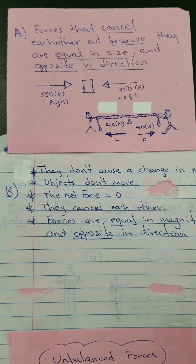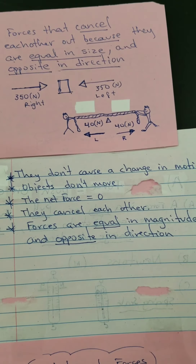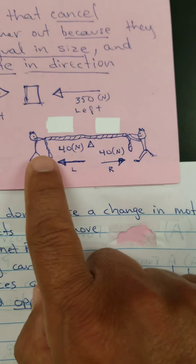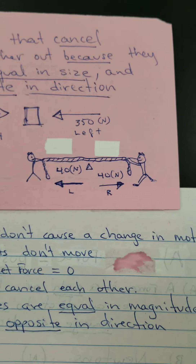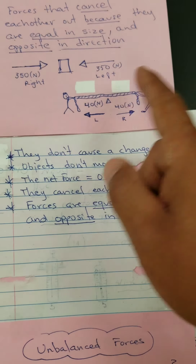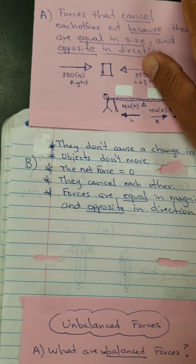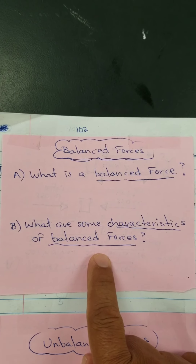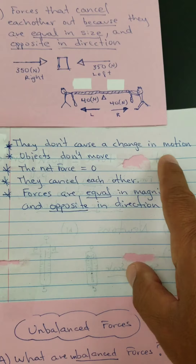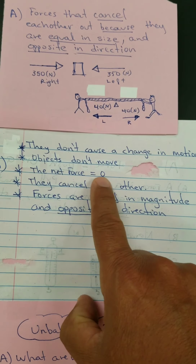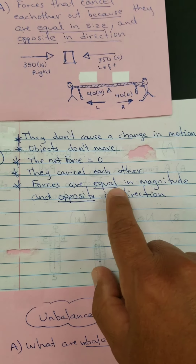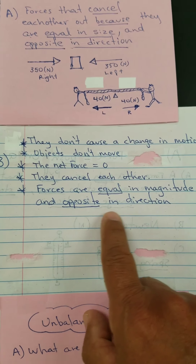This is an example of two boys playing tug of war — one has an eager face, but both are pulling with the same force: 40 Newtons, one to the right and one to the left. Neither of them is going to win. Characteristics of balanced forces: they don't cause a change in motion; objects do not move; the net force is zero; and the forces cancel each other out because they are equal in magnitude and opposite in direction.